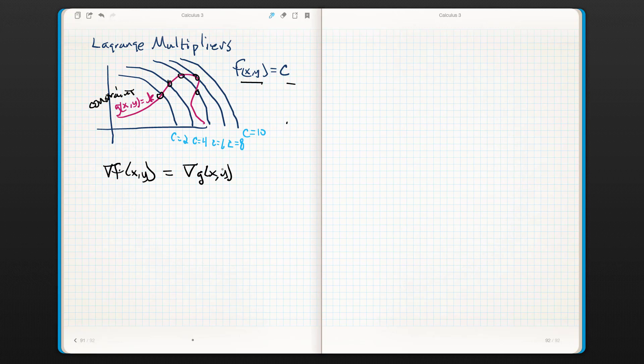But Ripley, my spidey sense is tingling. Why would those gradients be equal? Well, they're not necessarily going to be equal, but this vector and this vector will be equal by some, if I multiply through by some scalar, which I'll call lambda.